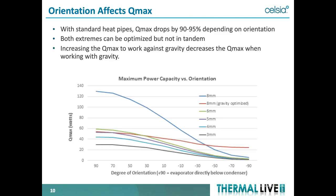How does orientation affect performance? A lot depends on the wick structure and whether it was designed to work against gravity. A chart shows performance of different diameter heat pipes versus gravity angle — from positive 90 degrees (heat source at bottom, cooling at top) to minus 90 degrees (reversed). Once you get to around minus 30 degrees, performance really drops off. However, with gravity optimization on an 8-millimeter heat pipe, you can see significantly better performance against gravity.